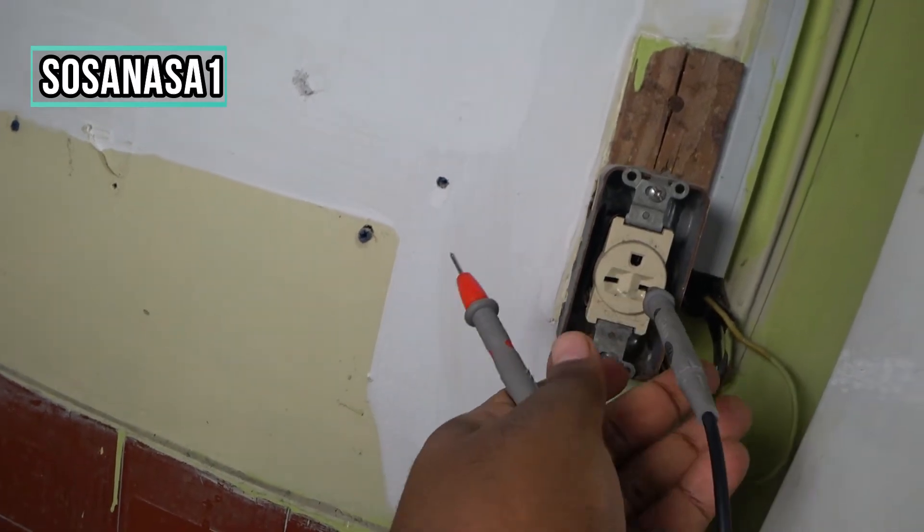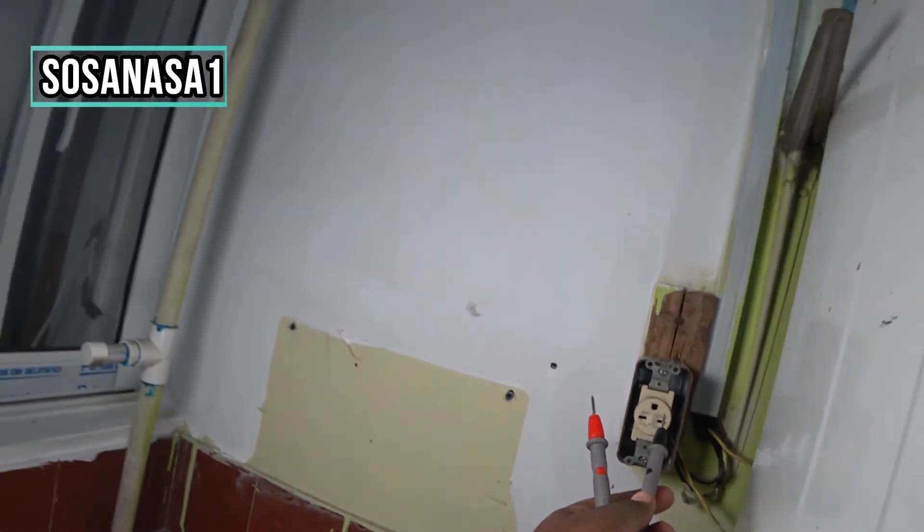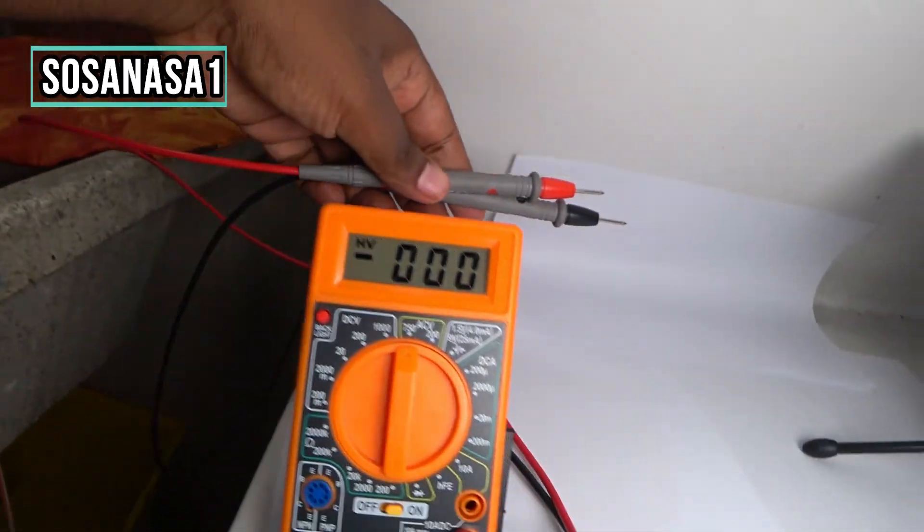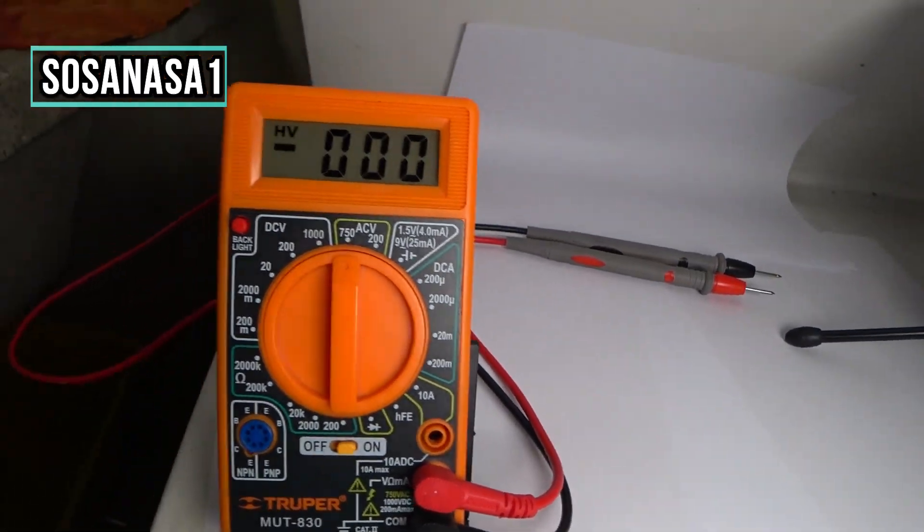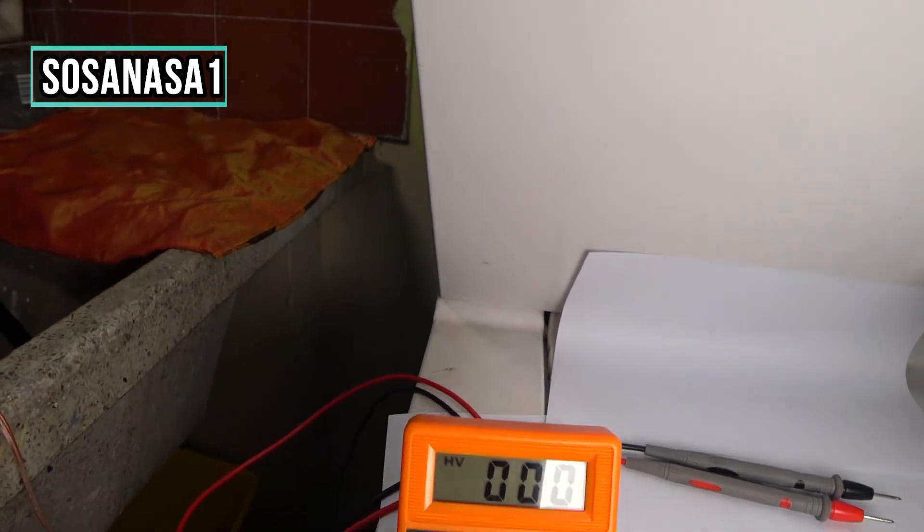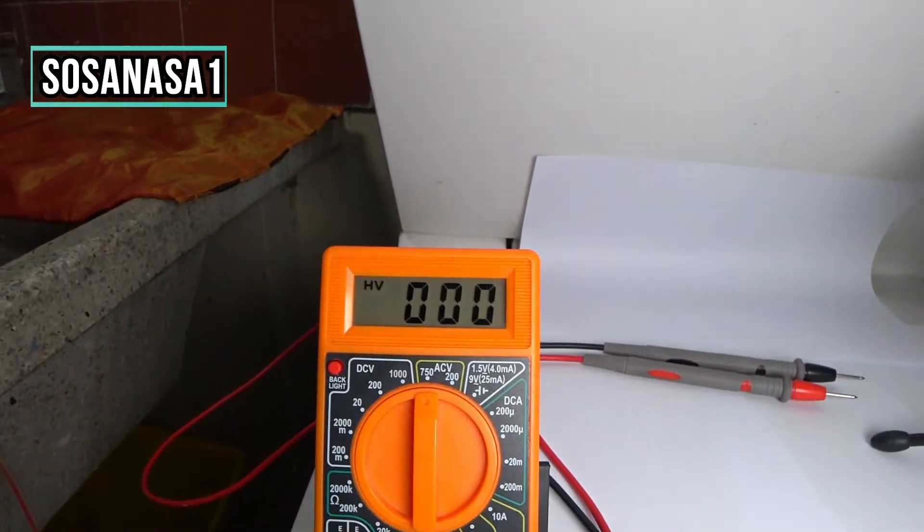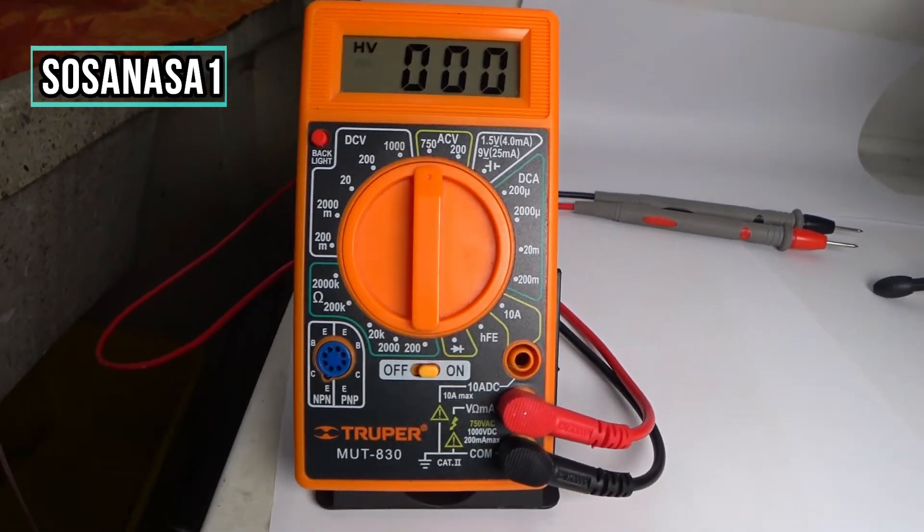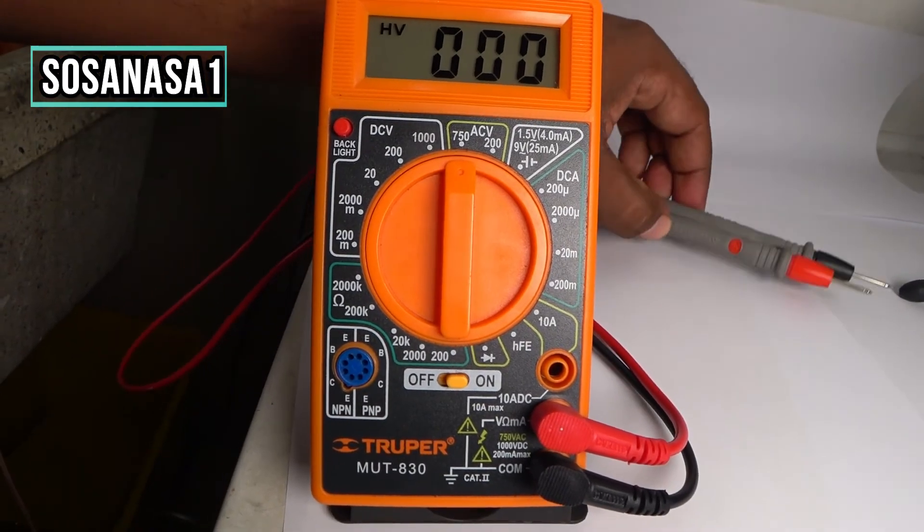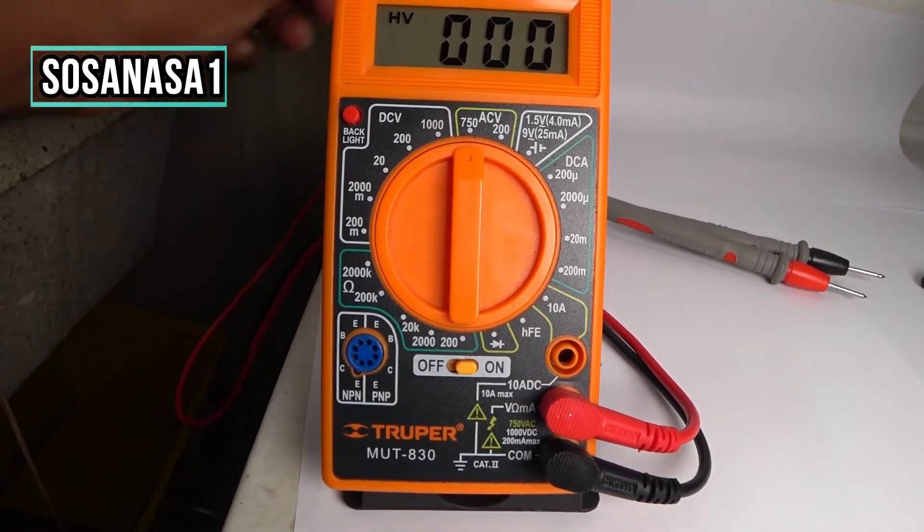One, and disconnect the other. Ready. Now the multimeter screen is zero because I disconnected these connectors from the power outlet. And this is all.